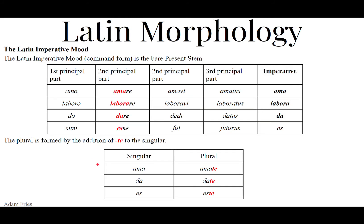How do we do this in Latin? It's pretty easy — the imperative singular is just the present stem. You go to the second principal part and chop off the -RE. For the irregular verb sum, esse, fui, futuros, chop off the -SE instead. So: AMA, LABORA, DA, and ES for amo, laborare, dare, and sum. Those are the imperative forms: love, work, give, be. You can add an exclamation mark to indicate the imperative — the Romans didn't use them, but you can.